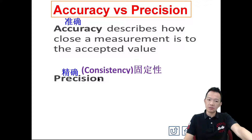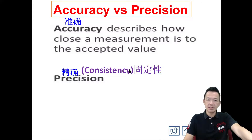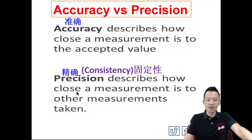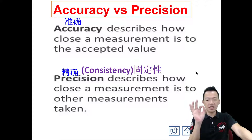Precision — 精確度 — this one is less common. Precision, or sometimes we call it consistency — 固定性. It describes how close a measurement is to other measurements taken.